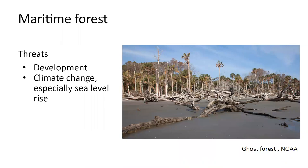These forests are threatened first by development — maritime forests occur in barrier island environments, which in North Carolina are among the most popular areas for development, so huge amounts of this forest have been lost. More recently we have effects of climate change, especially sea level rise. These forests are somewhat resistant to salt spray but cannot tolerate inundation by saltwater for long periods. This forest type is extremely threatened in North Carolina — very little mature maritime forest remains, making them a significant conservation concern.